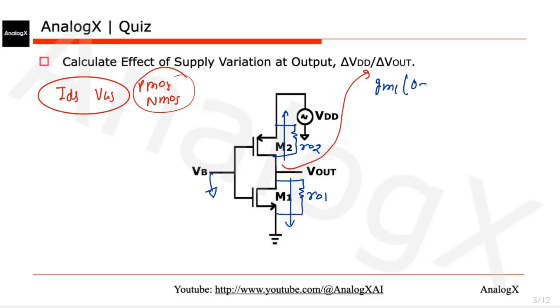Plus gm2, and what will be the VGS? That will be 0 minus VDD plus VOUT minus VDD by ro2.